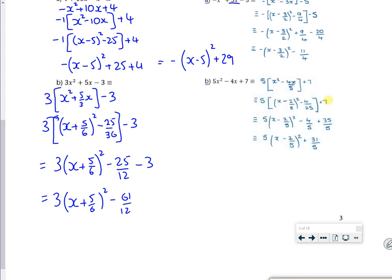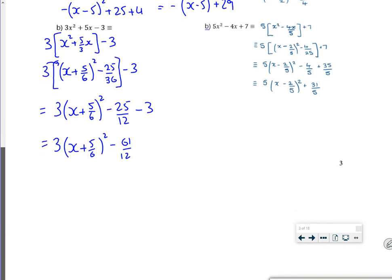There. So I'll take the 5 out. It gives me 4 over 5. Half of that is 4 over 10, which is 2 over 5. Square and take away is a minus 4 over 25. And then when you multiply 3 by the 5, it changes it. So you're just going to follow the steps and take your time to make sure you get it right.